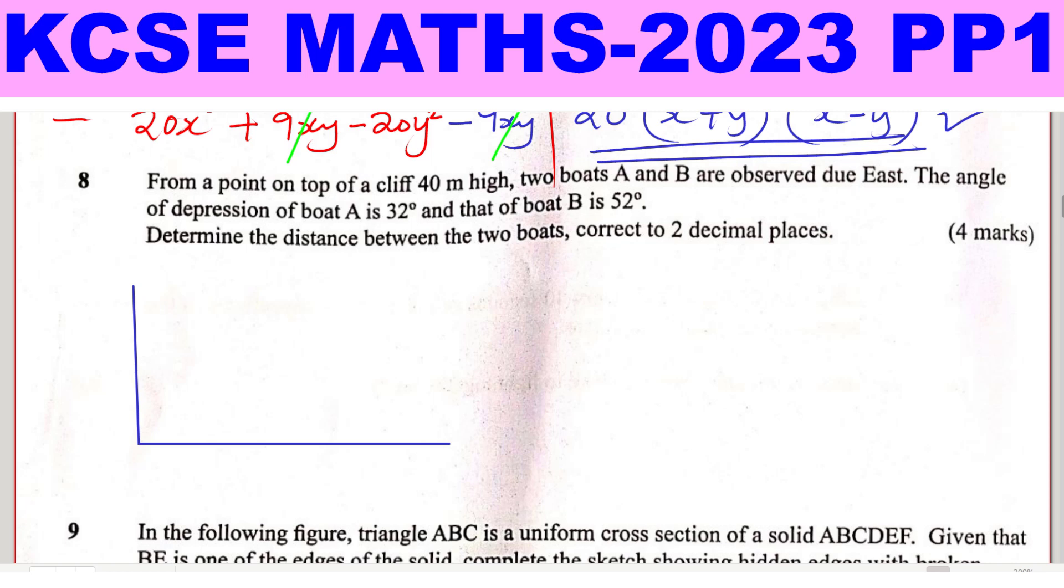The angle of depression of boat A is 32 degrees. The angle of depression, you get it from the top as you observe, as you look downwards. There's a difference between the angle of elevation and the angle of depression. The angle of elevation is when you are on the lower side, you are elevating your eyes, you're looking upwards. Depression, you're looking downwards.